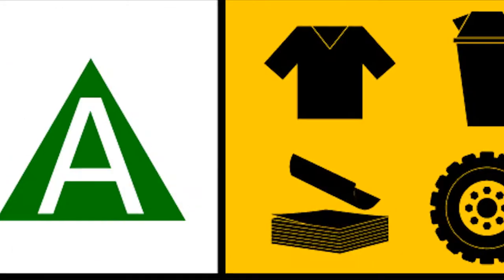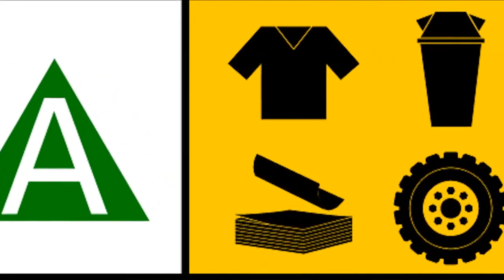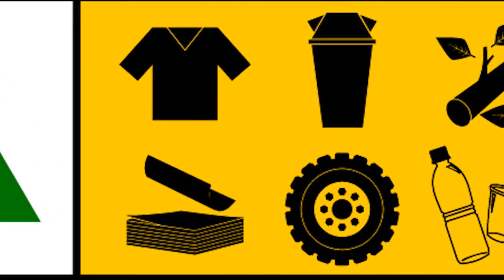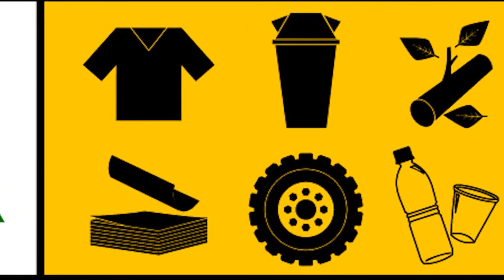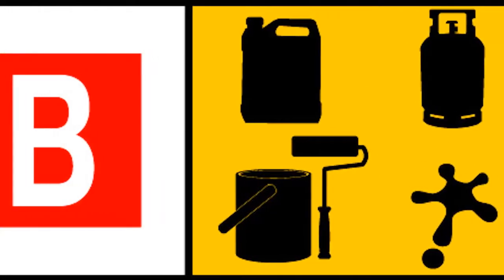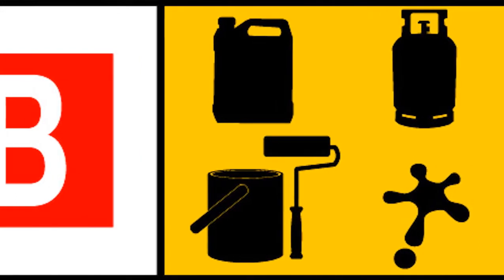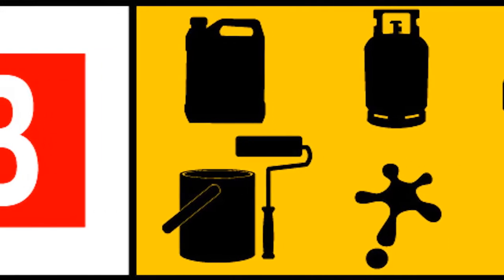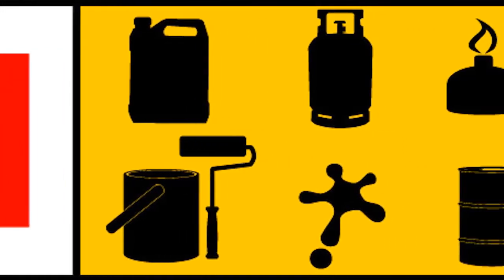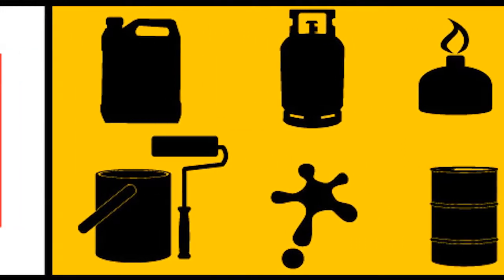The first classification is an A-class fire. These are common combustibles such as wood, paper, and cloth. Second class is a B-class fire, which are flammable liquids and gases such as gasoline, propane, or solvents.